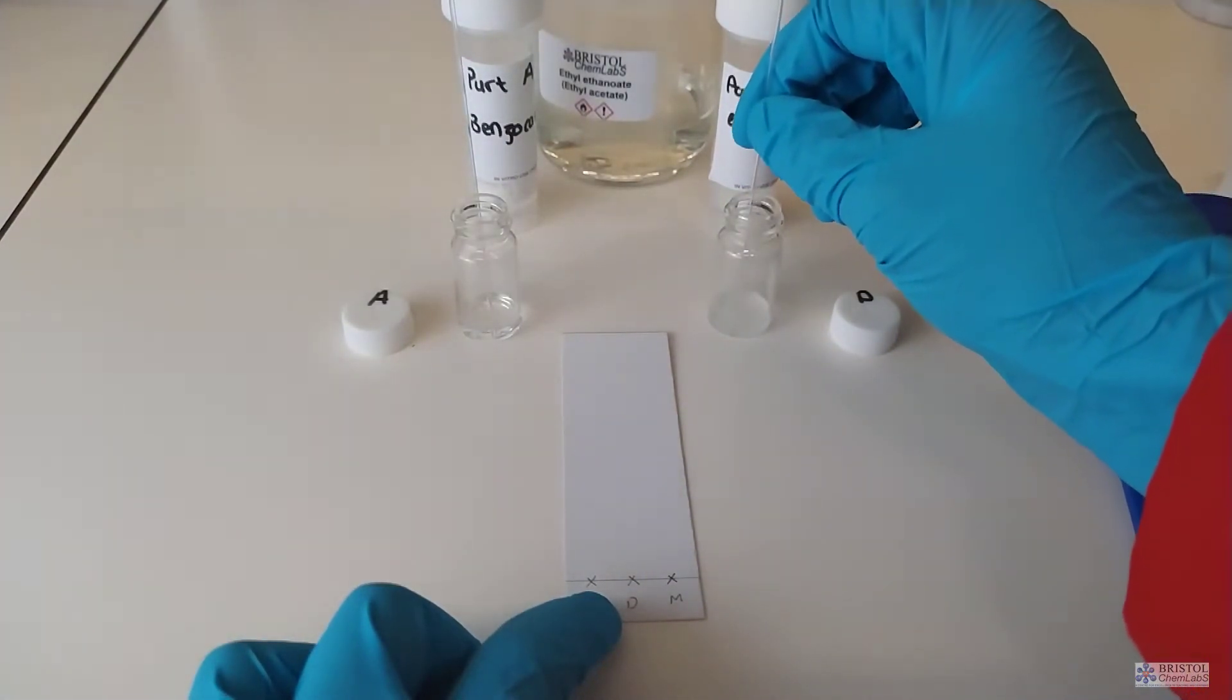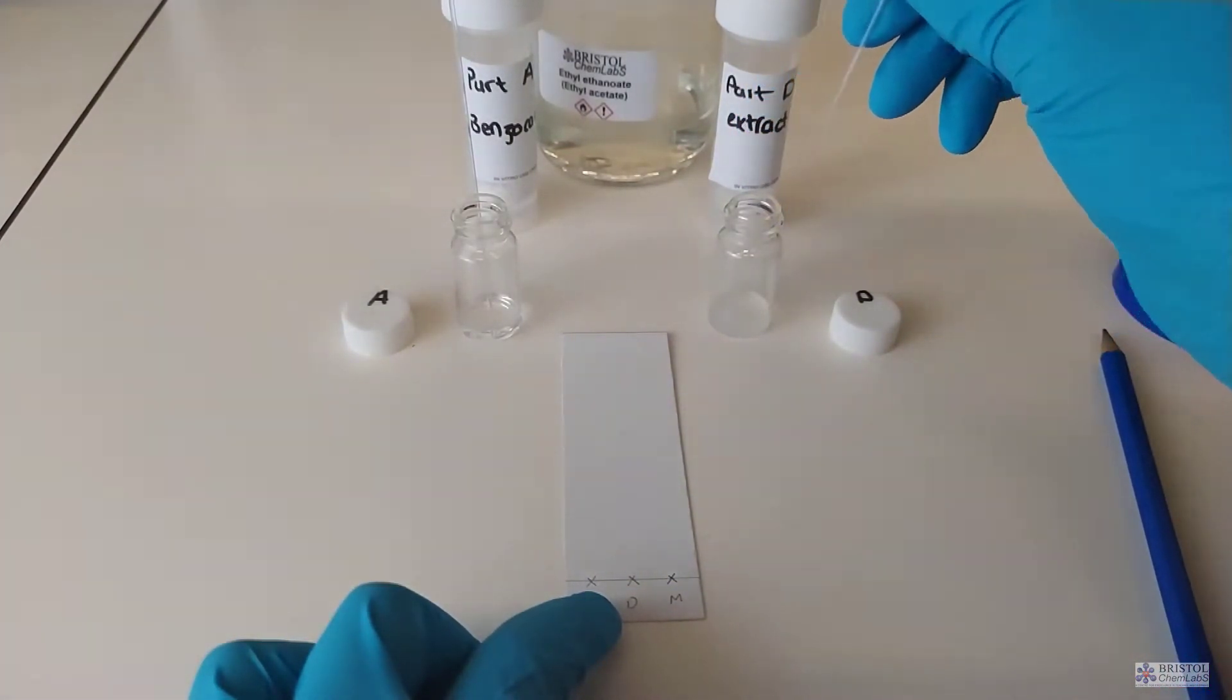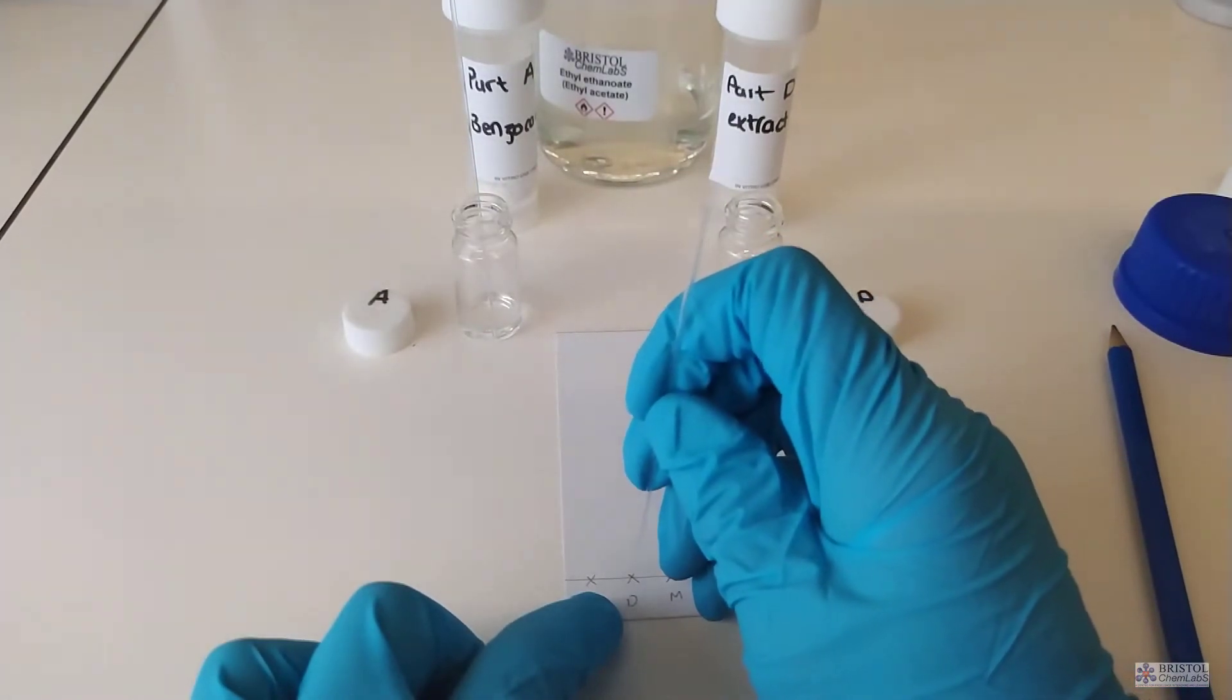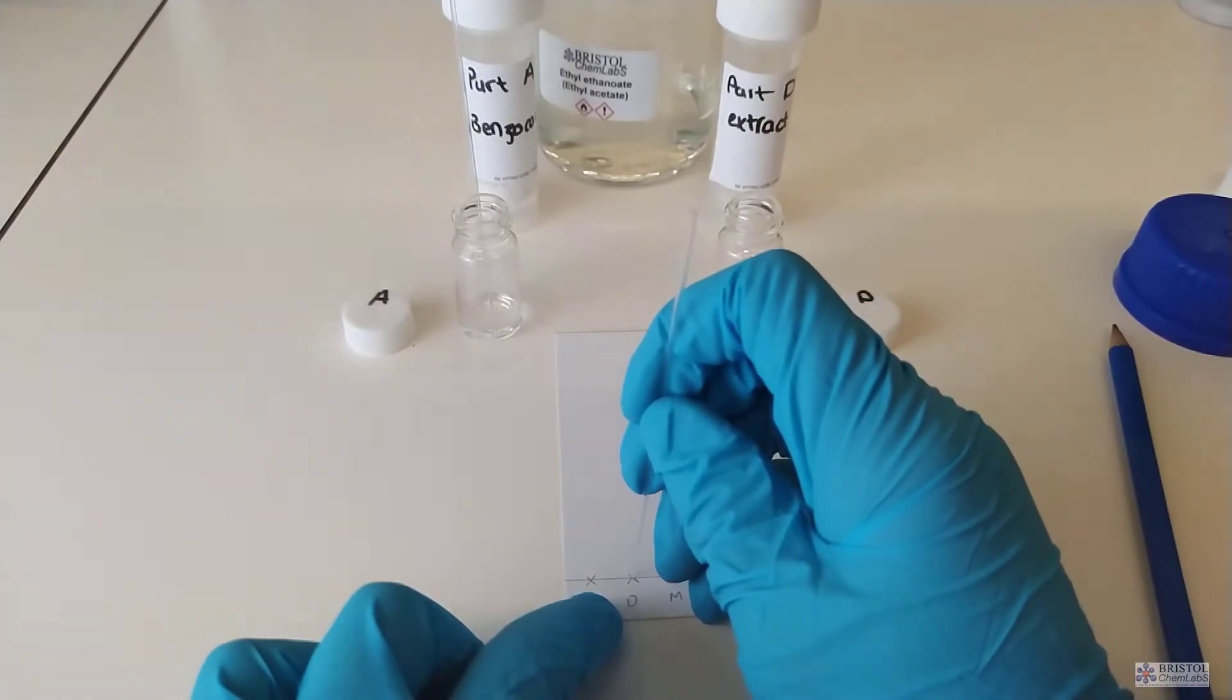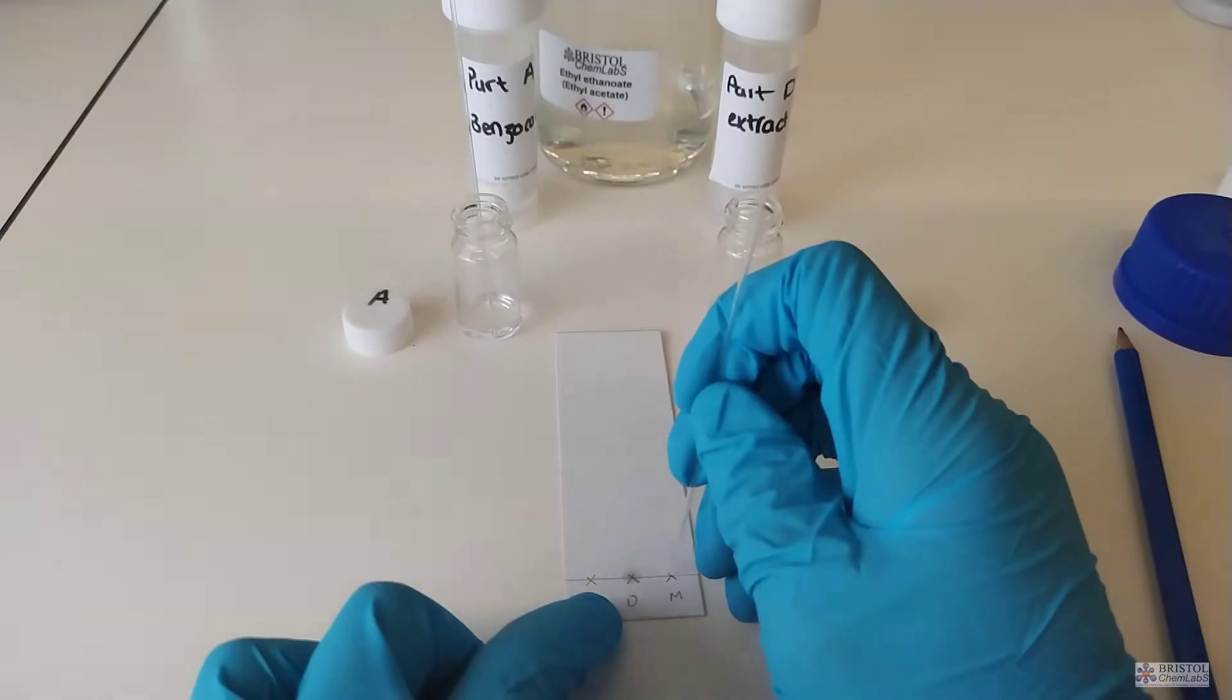Before we run the TLC we put the plate under an ultraviolet light. Because the sample applied has covered over the fluoresce it appears as a dark spot against a green fluorescent background. You can also check there are no impurities elsewhere on the plate at this point.